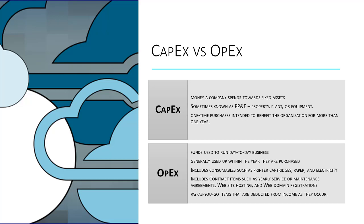In IT, CAPEX items typically include things like servers, network equipment, power systems, UPSs, printers, scanners — the typical stuff you see in an office that IT repairs, covers, and deals with.